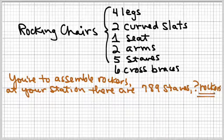In this case, there are only 789 staves at our station. All of the other components, we have more than enough to make the rockers.